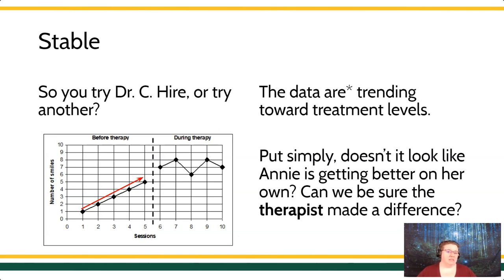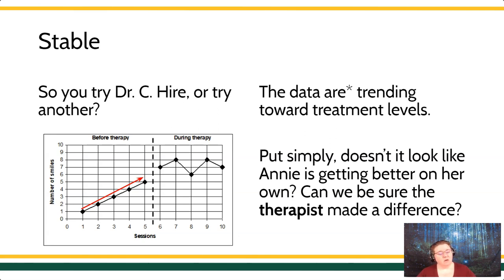Our baseline data are trending up. This is called an ascending baseline. It looks like Annie's behavior — the number of smiles — is improving on its own. So if we have this ascending baseline, if the behavior is getting better on its own, why would we start treatment? How can we actually be sure if the therapist, and not something else, was what was making the difference? These data are not stable because data in the baseline condition are trending toward data in the treatment condition.